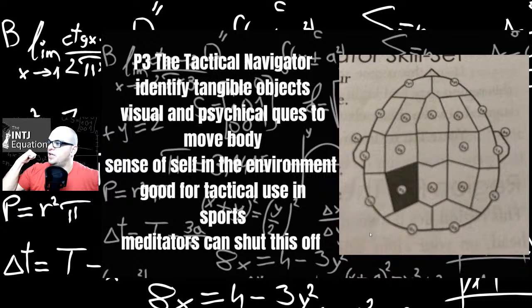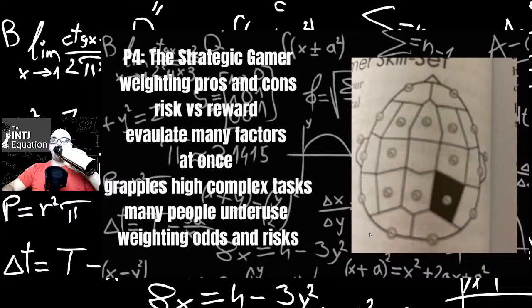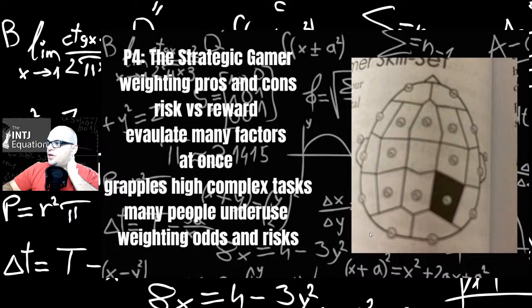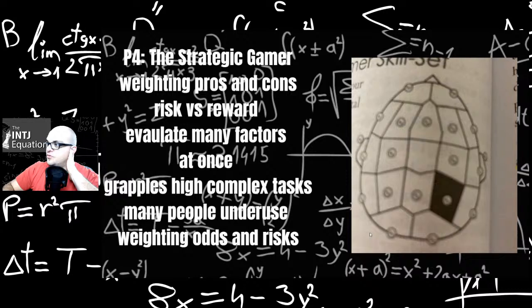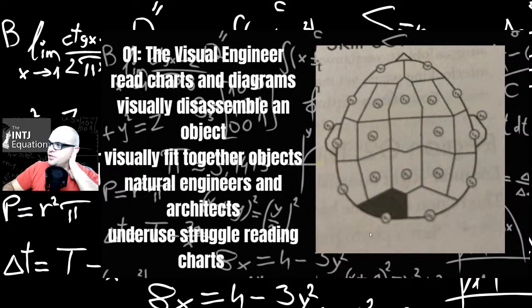P3, the tactical navigator: identify tangible objects, visual and physical cues to move body, sense of self in the environment, good for tactical use in sports. Meditators can shut this section off when they're meditating. P4, the strategic gamer: weighing pros and cons, risk and reward, may evaluate many factors at once, grapples high complex tasks. Many people underused weighing odds and risks. Again this does sound SE. That may be when SE is troubled. I know a lot of people with antisocial personality disorder are very impulsive and don't think before they leap. So this could be a healthy SE function versus an unhealthy. That's kind of interesting. I would like to study the neocortex activity in people who are traumatized and type. That'd be kind of interesting blending all those together.